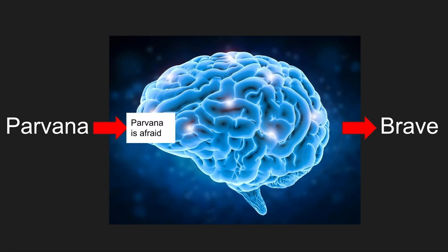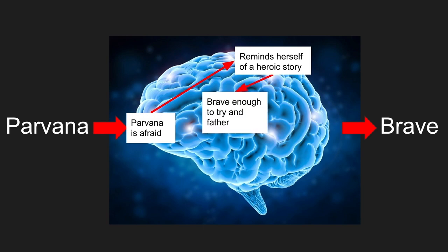These become the steps in our thinking that we need to take in order to go from Parvana to brave. We need to recognize that Parvana is afraid, but that when she's afraid she reminds herself of this heroic story. We also need to take into account that she was brave enough to try and find her father to begin with, and that even though she feels fear, she overcomes it. It's all of these things taken together that make Parvana brave, and that's what our explanation points out.